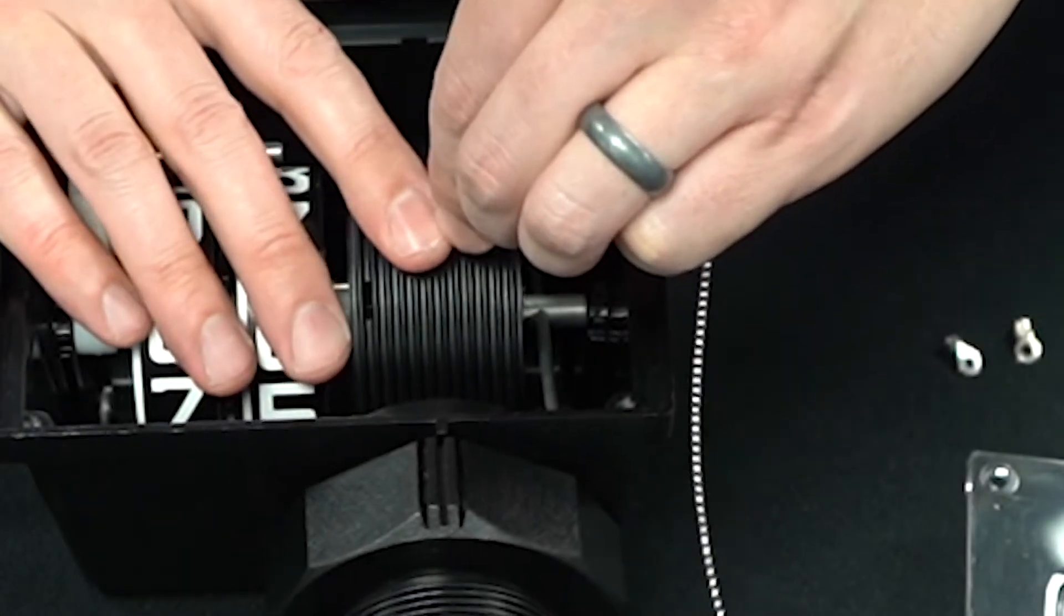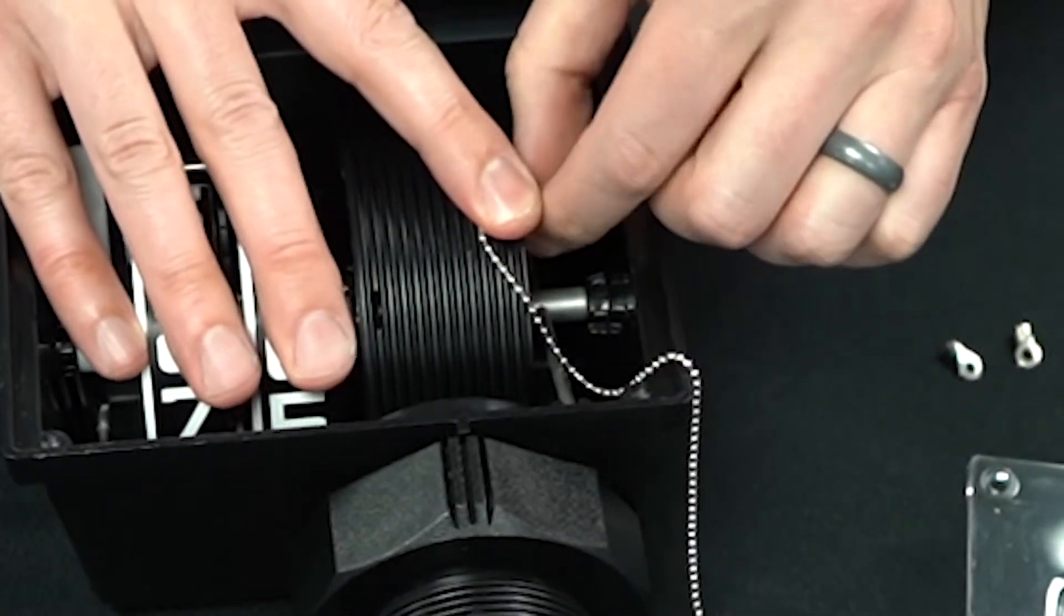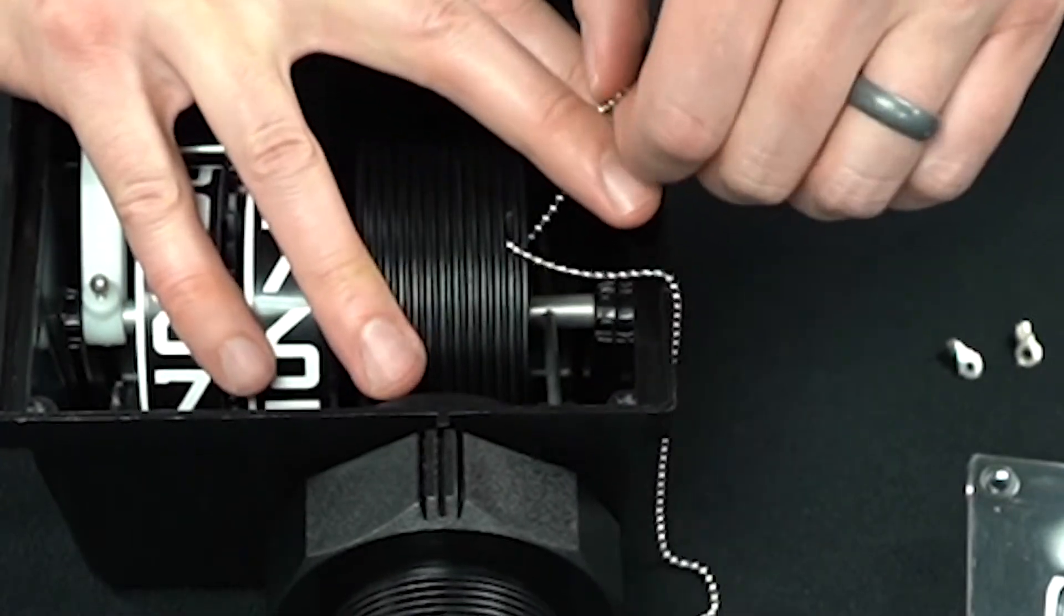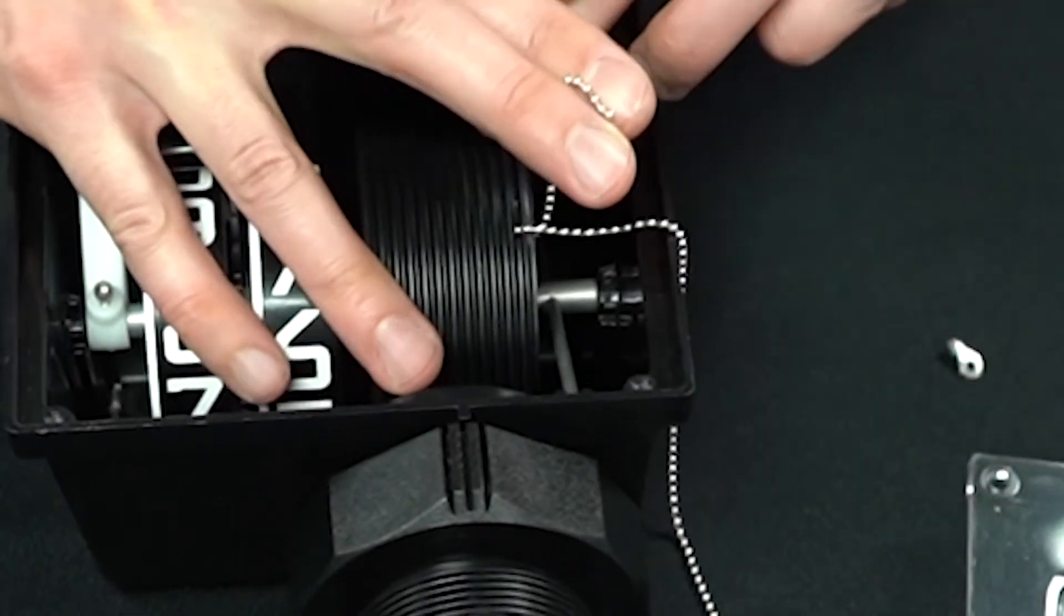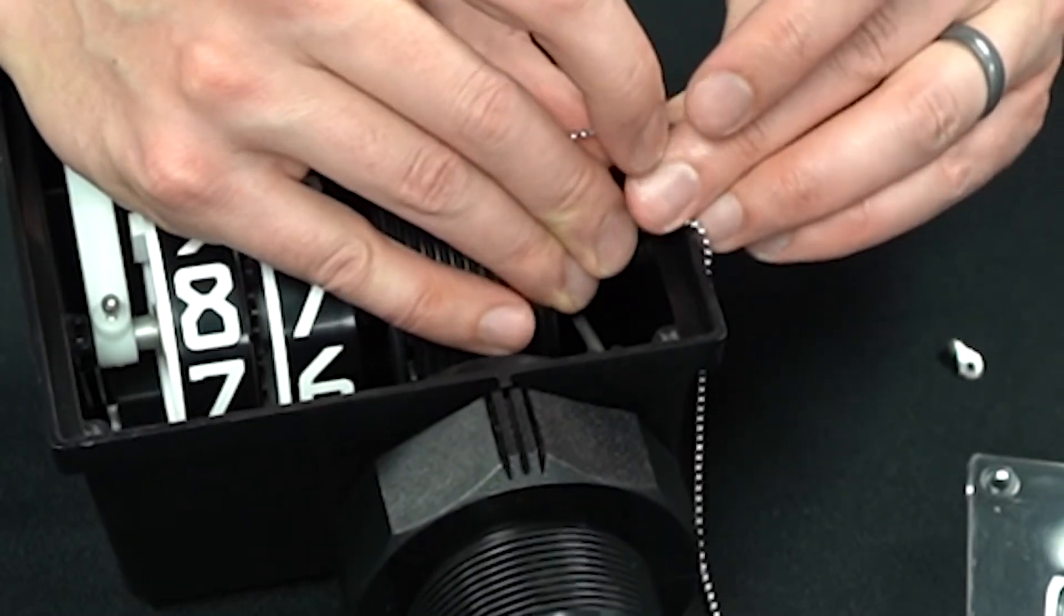Without releasing all the tension in the spring, attach the new chain. The pulley might have to be rolled up an additional quarter turn to access the chain hole on the right side of the pulley. Insert the chain into that hole and attach the eyelet connector. The eyelet connector should be on the inside of the pulley when you're done.